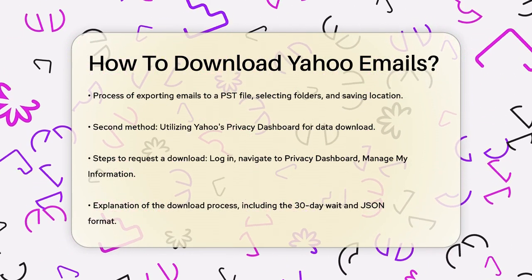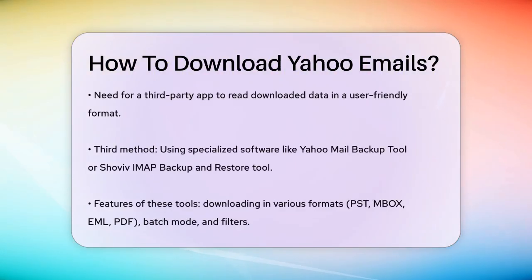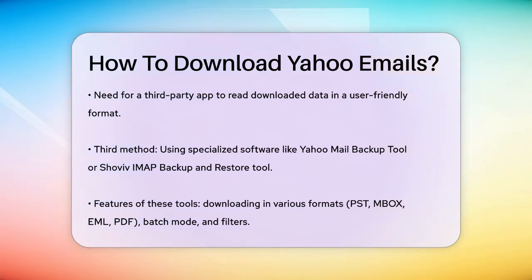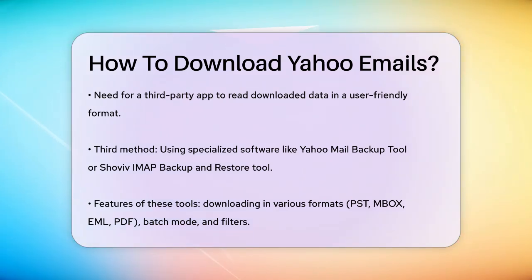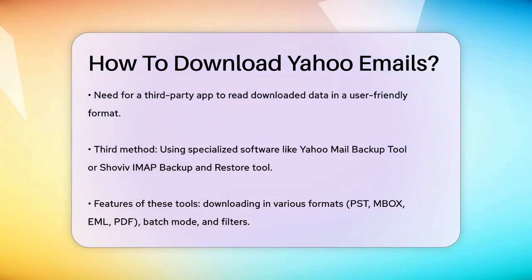If you prefer a more automated and user-friendly approach, you can use specialized software like the Yahoo! Mail Backup Tool or the Shaviv IMAP Backup and Restore Tool. These tools allow you to download your Yahoo! emails in various formats such as PST, Mbox, EML, or even PDF. Here's how it works: you download and launch the software, log in with your Yahoo! credentials, select the folders and file format you need, and apply any filters like date range or specific subjects. Then you simply click Start to begin the backup process. These tools are especially useful because they offer advanced features like batch mode for multiple accounts and filter options, making the process much quicker and more efficient.